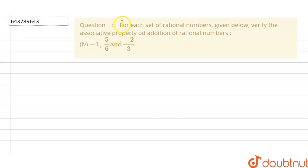Hello friends, today's question is for each set of rational numbers given below, verify the associative property of addition of rational numbers. The question is minus 1, 5 upon 6, and minus 2 upon 3.